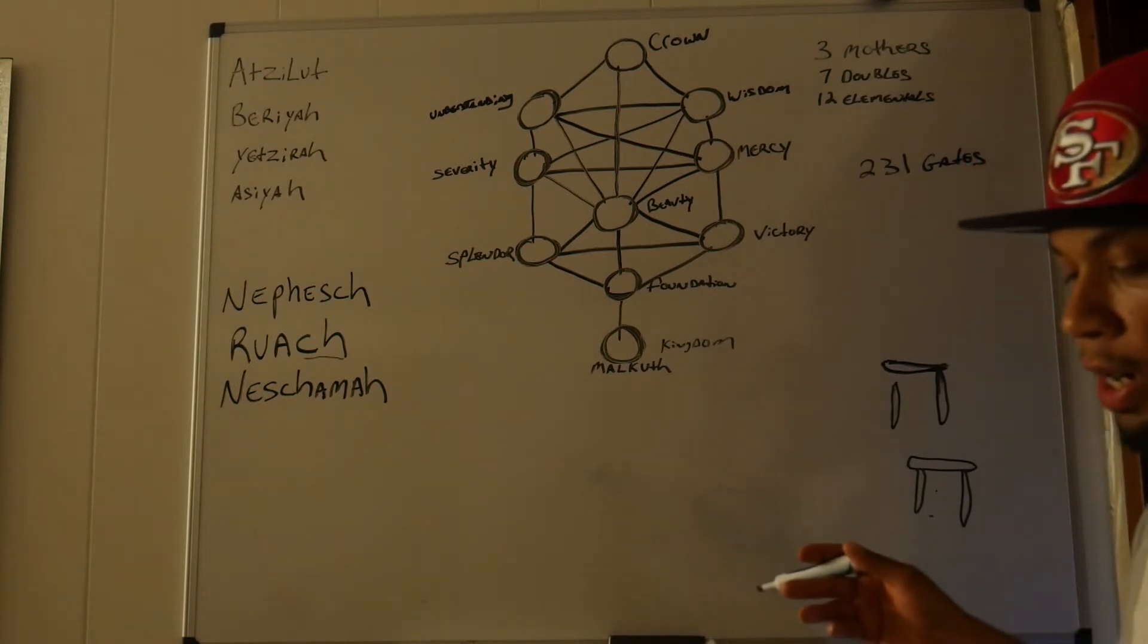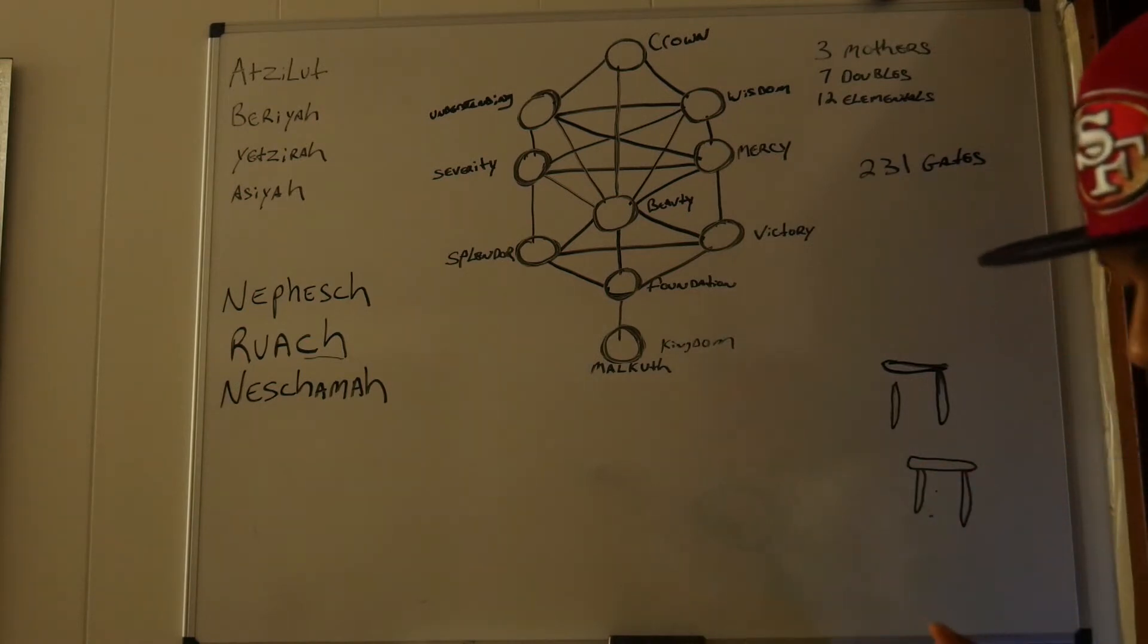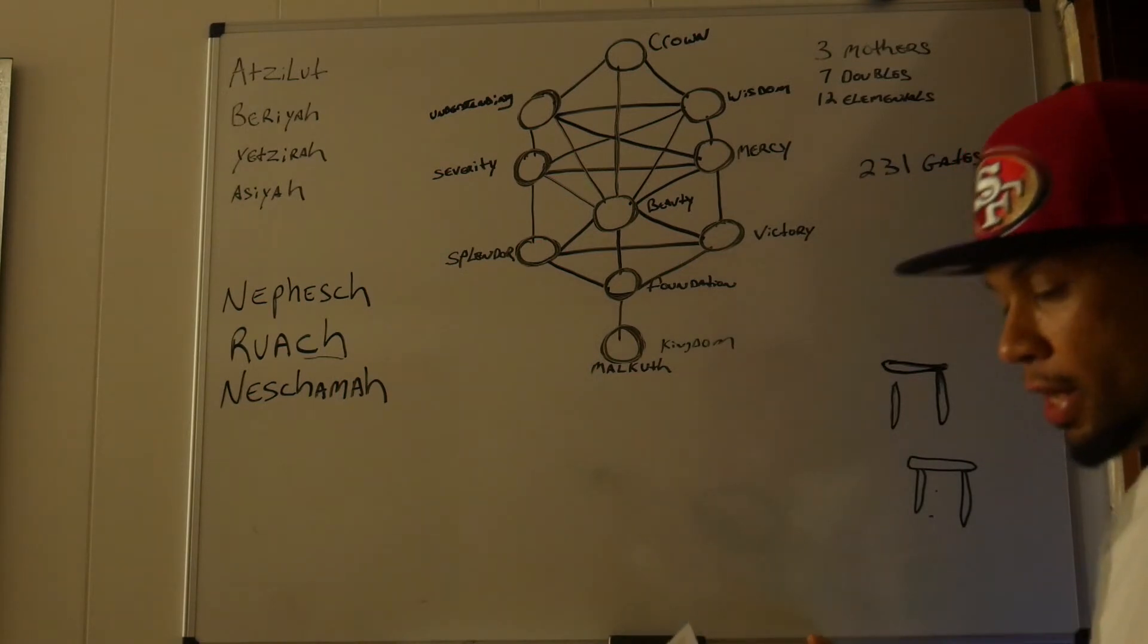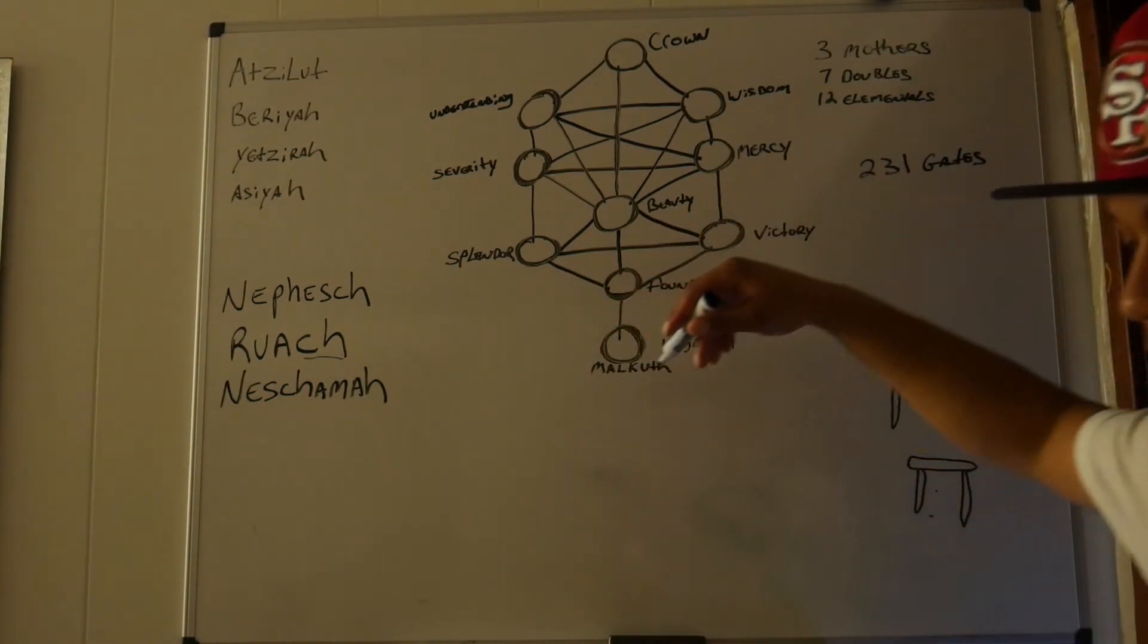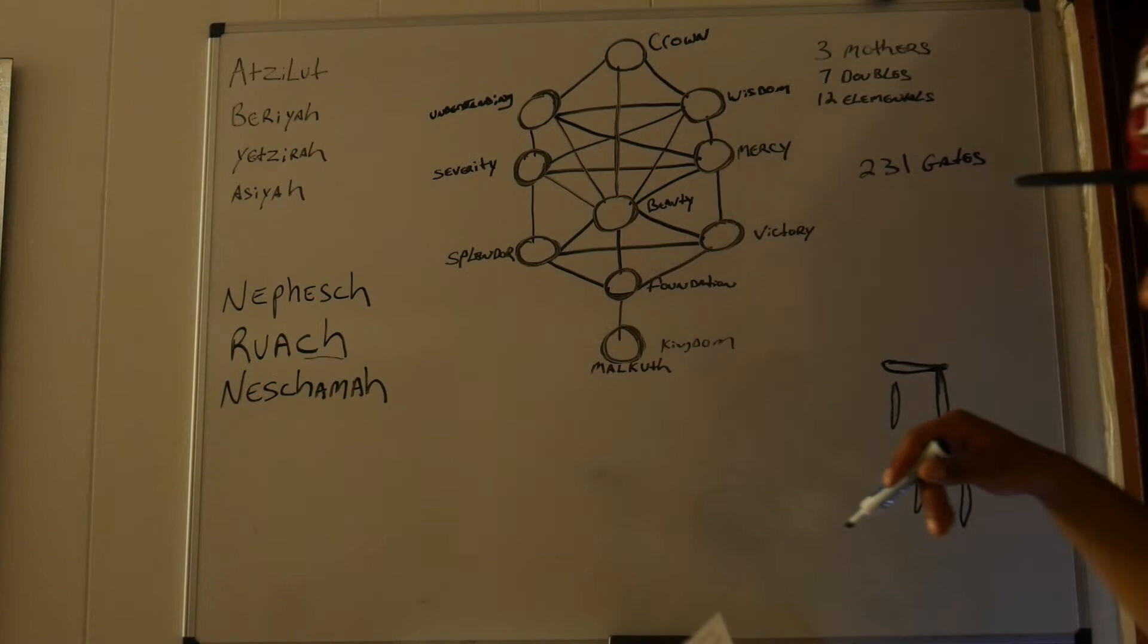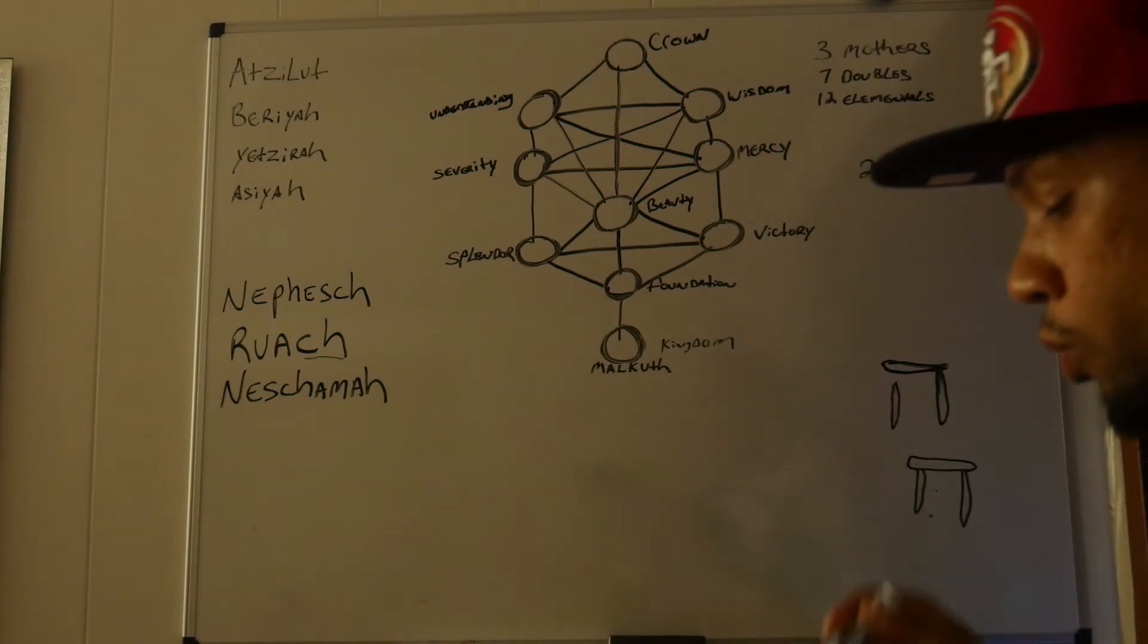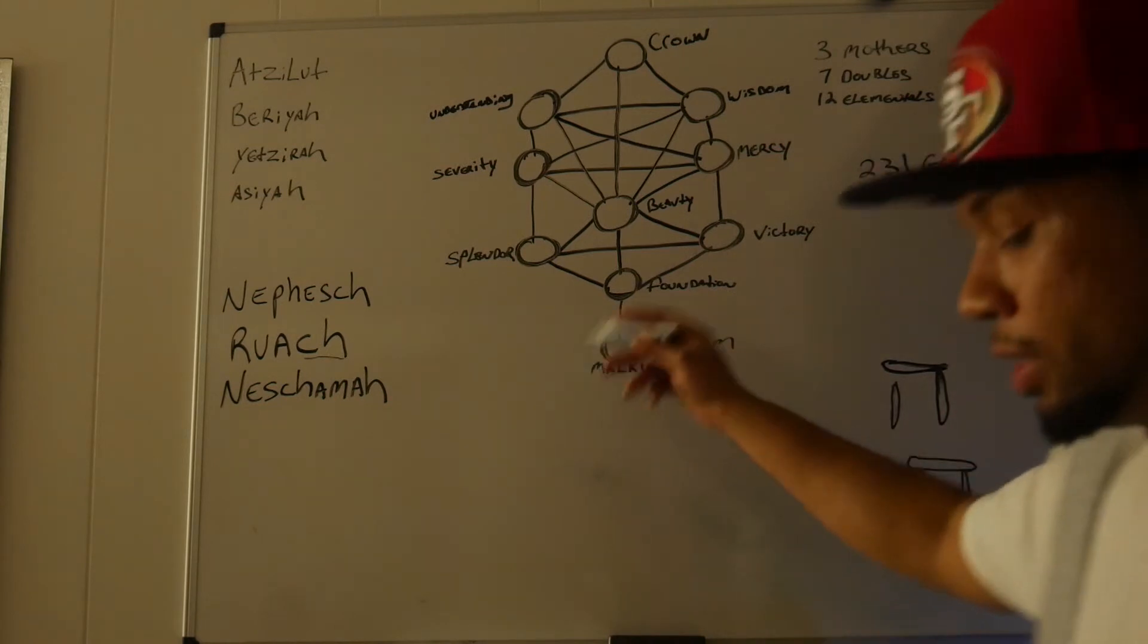Sphere of operation is called Kokab, which is stellar light, elegance, swiftness, scientific knowledge and art, consistency of speech. The planet here is Mercury. Archangel Mikael, which is the prince of splendor and wisdom. The order of angels is Beni Elohim, which I believe is son or sons. Elohim is Gods or God, so it's just son of God.